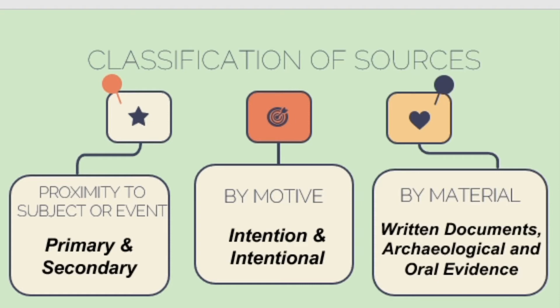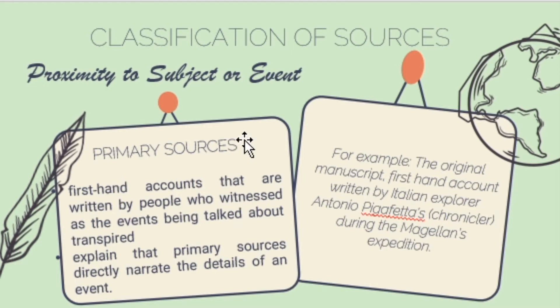In studying history, we also have to identify the classification of sources. There are three classifications: according to proximity to subject or event, according to motive, and according to material. Basically, there are two general kinds of sources according to proximity to subject or event. First, we have the primary source — meaning first-hand accounts, sources written by people who witnessed the events being talked about.